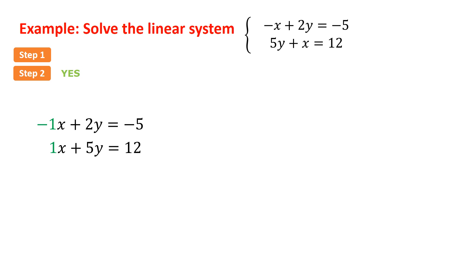Step 2: Are the coefficients of one variable additive inverses? Yes, they are. Negative 1x and positive 1x are additive inverses. So we can go ahead to step 3. We're going to combine these two equations. We get 7y equals 7. We divide both sides by 7 and get that y equals 1.